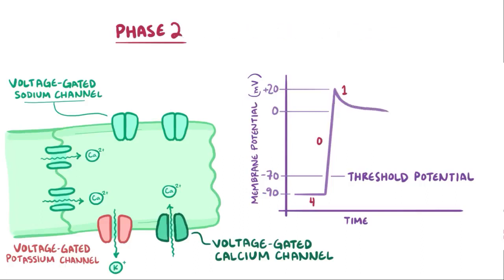And this is called phase 2, or the plateau phase. This calcium is super important because it's this influx of calcium that ultimately gets the myocyte to contract, which is how the heart contracts. So, phase 2 is what's responsible for the length of the action potential as well as the heartbeat itself.